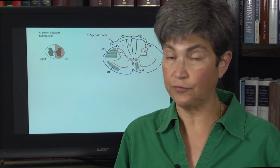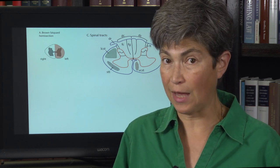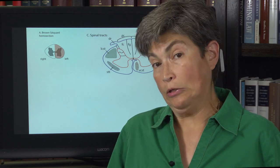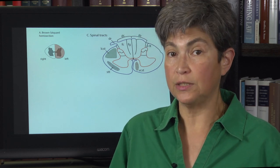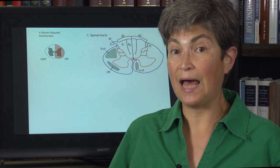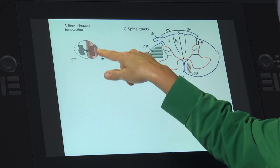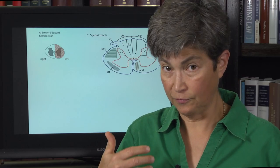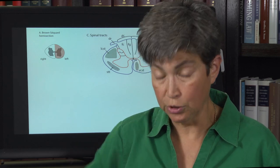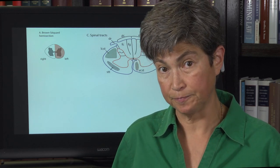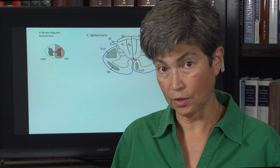Let's take the tracks in turn, starting with light touch, vibration, and proprioception — the lemniscal pathway. You'll lose light touch, vibration, and proprioception ipsilateral to the lesion. So if the lesion is on the left, there will be a loss of light touch, vibration, and proprioception below the level of the segment.